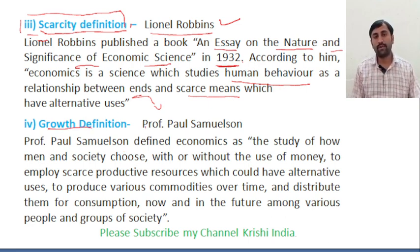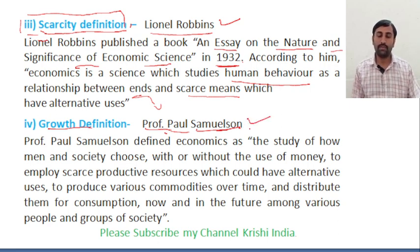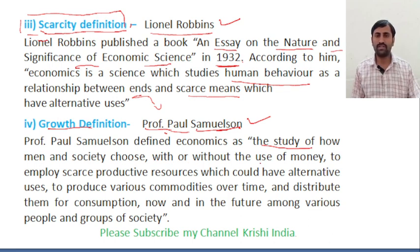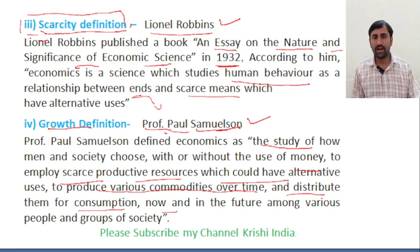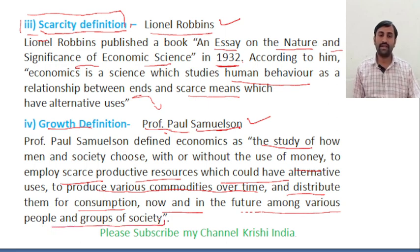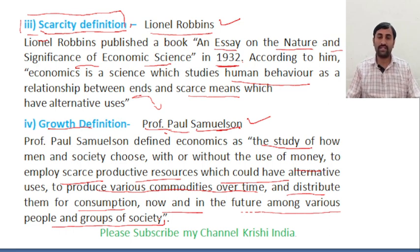The fourth definition is the growth definition, given by Professor Paul Samuelson. Paul Samuelson wrote about the study of how men and society choose with or without the use of money to employ scarce productive resources, which could have alternative uses, to produce various commodities over time and distribute them for consumption now and in the future among various people and groups of society.